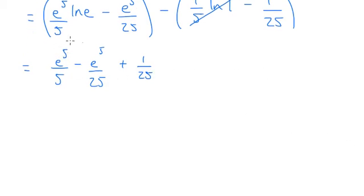Now if I turn this into a denominator of 25, that would be 5 25ths, because then we can group these two terms together. We've got 5 e to the 5 over 25 minus 1 e to the 5 over 25, so that's going to be 4 e to the 5 over 25, plus our 1 over 25, so that's my final answer.